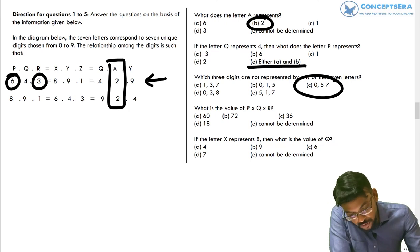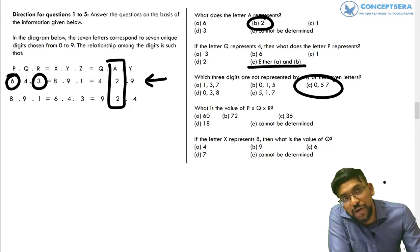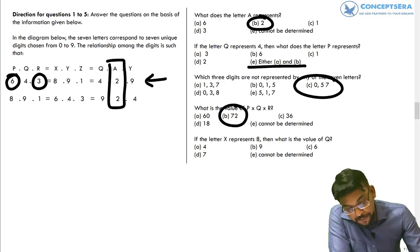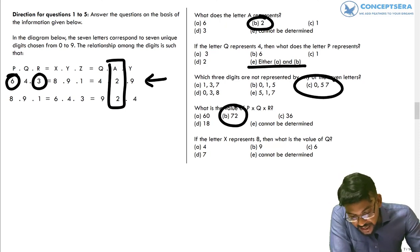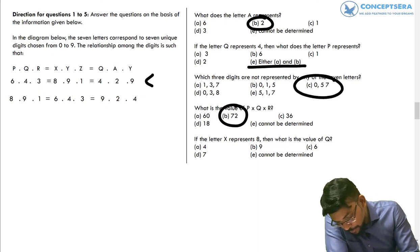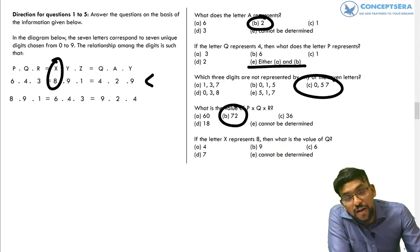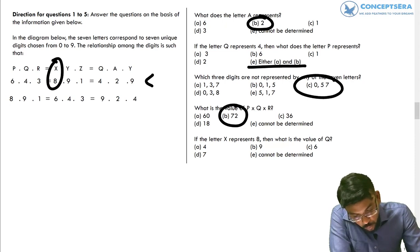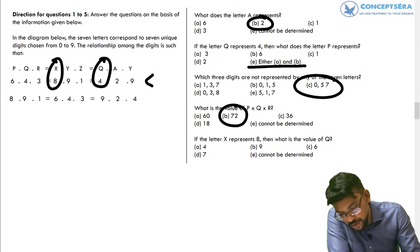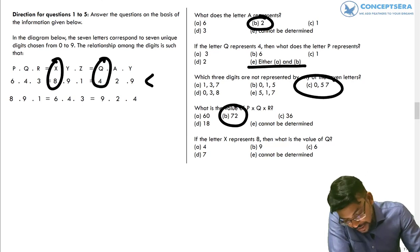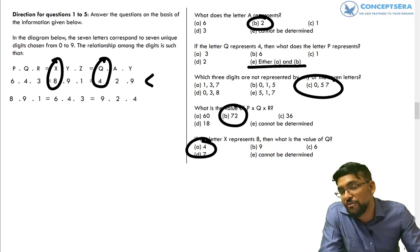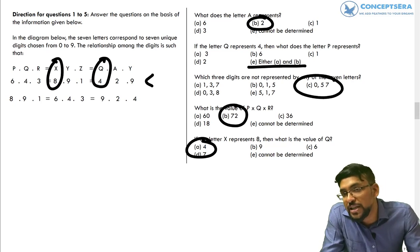The fourth question asks for the value of P × Q × R, which is 72, so the right answer is B. Finally, the fifth question states: if X represents 8, what is the value of Q? When X is 8, we are in the first case, so Q is fixed at 4. The right answer for this question is A. All five questions are solved very easily after decoding the given case.